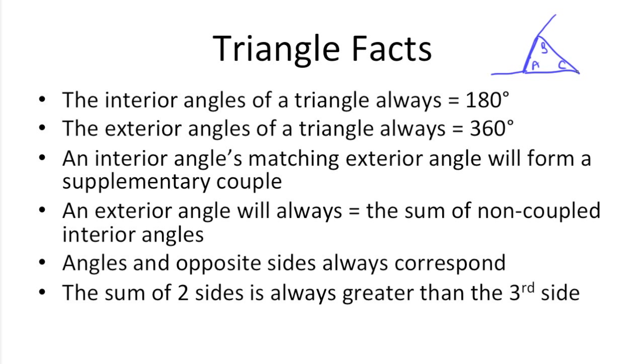The exterior angles of a triangle will always add up to 360. So angles X, Y, and Z. An interior angle's matching exterior angle will always form a supplementary couple. So in this case, XA, BY, CZ, each of those pairs will add up to 180.